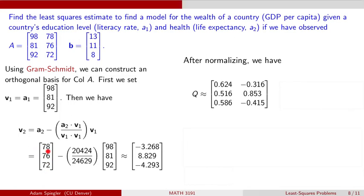But if I want to do a QR decomposition, I need to first normalize those vectors. So I'm going to take this vector 98, 81, 92, and normalize it. And that's what we have over here. And then I take this second basis vector, which is orthogonal to the first, and I normalize it so that it has length one. And that gives me my matrix Q.